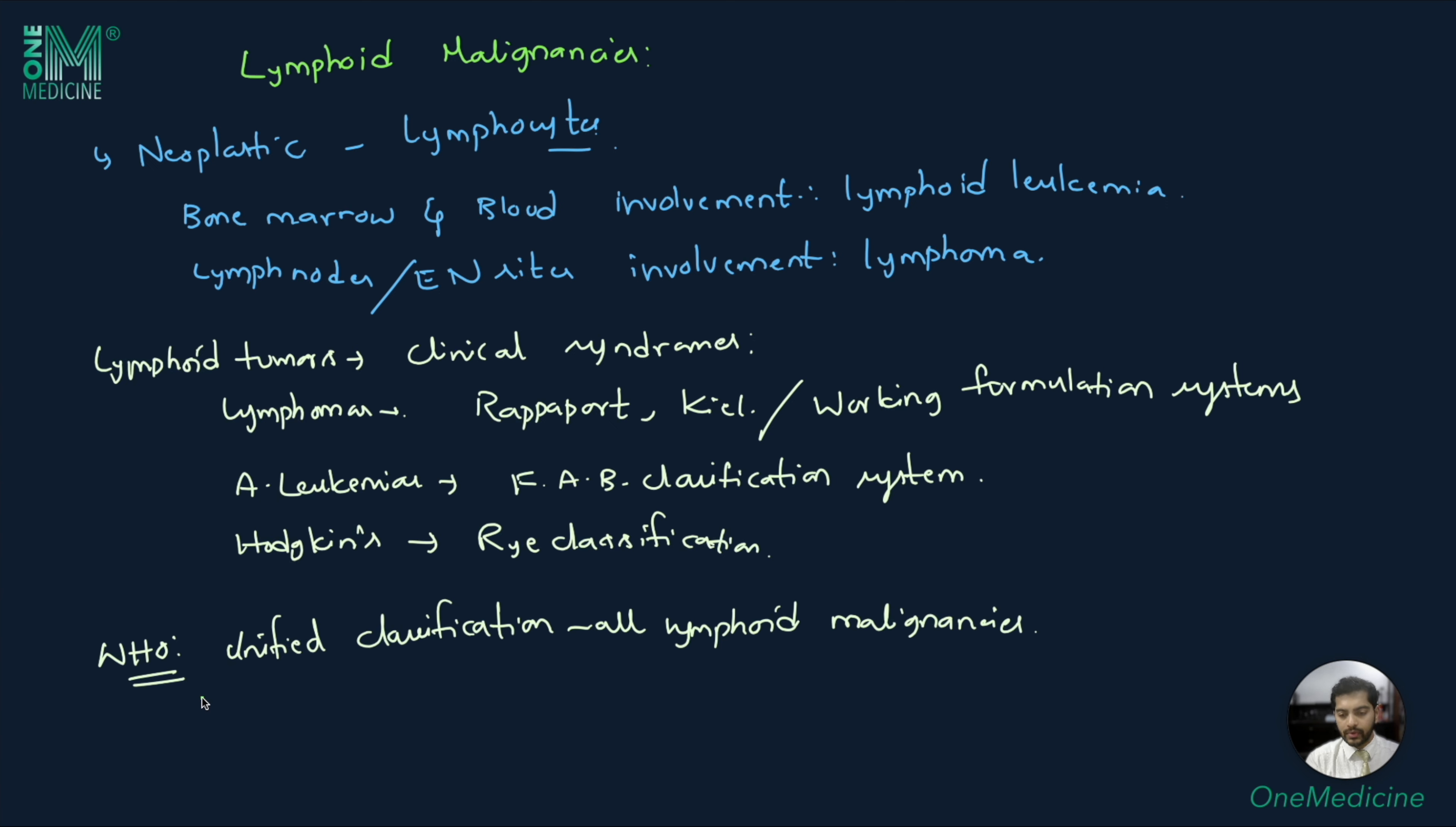The new WHO classification takes into account the cell of origin, that is T cells or B cells, and the maturation stage, that is precursors or mature cells. Let us now try to understand the clinically relevant understanding of lymphoid malignancies.